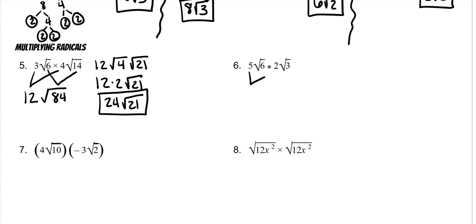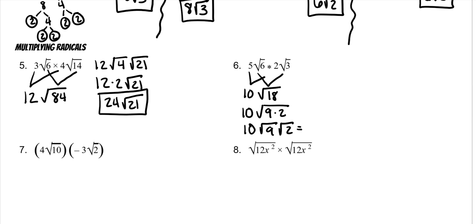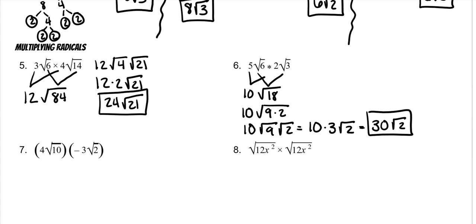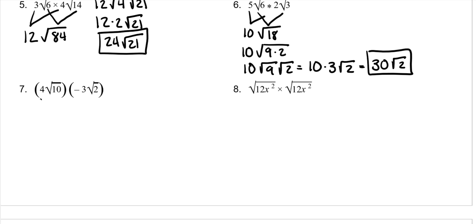Same thing over here: 5 times 2 is 10, and 6 times 3 is 18. So you could recognize that 18 is 9 times 2, which is the square root of 9 times the square root of 2. And the square root of 9 is 3, which makes it 30 square roots of 2.